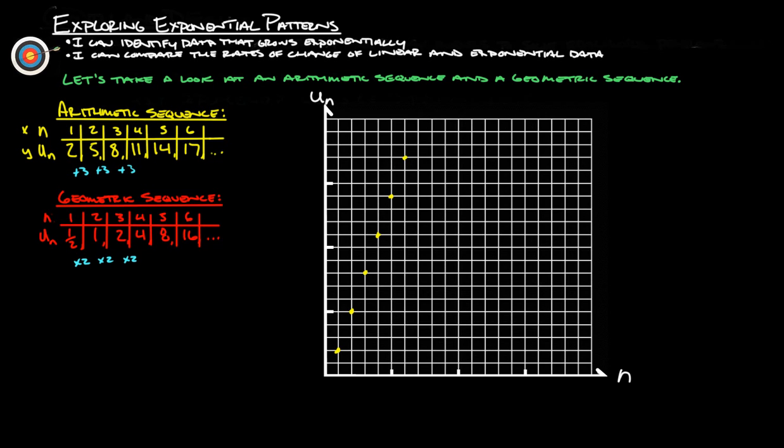6, we're up at 17. Now what we can do is we can actually create ourselves a nice little line here. So, that goes through all those points. If you'll notice, pretty easy to tell that this here makes a nice straight line.